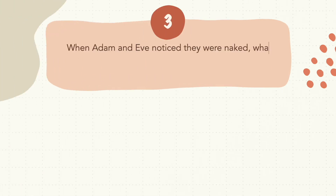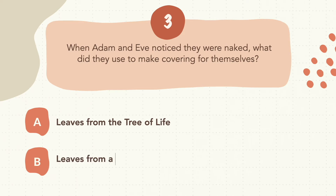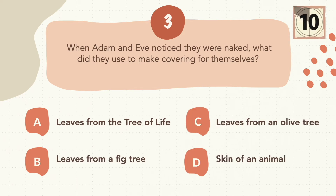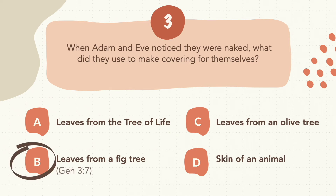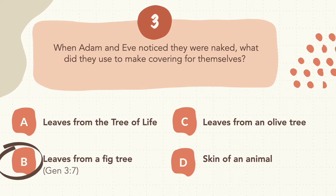Question 3: When Adam and Eve noticed that they were naked, what did they use to make a covering for themselves? The correct answer is B, leaves from a fig tree.